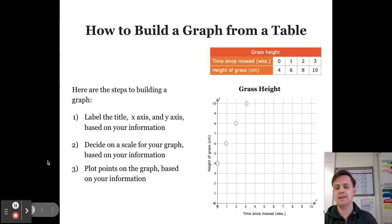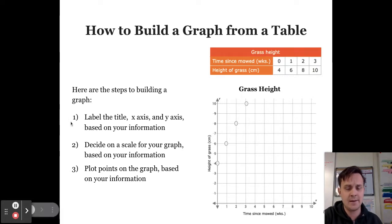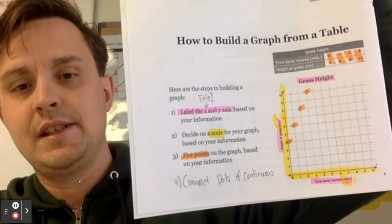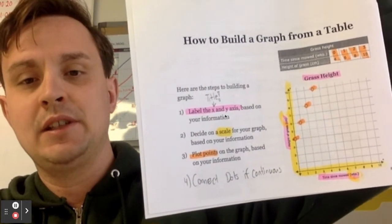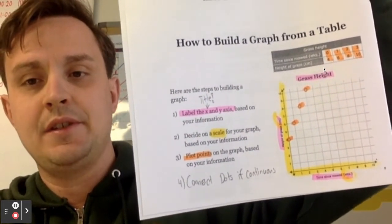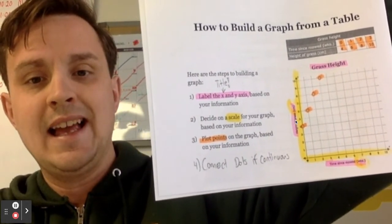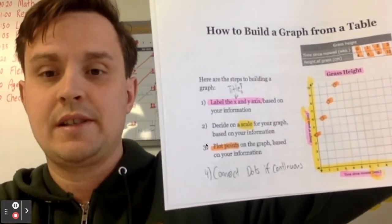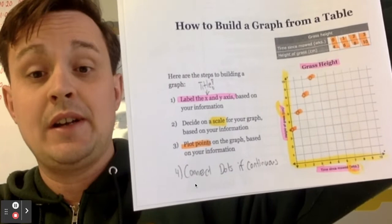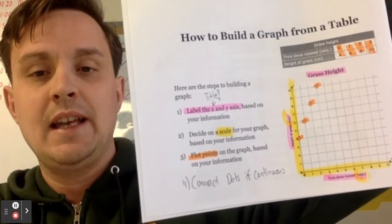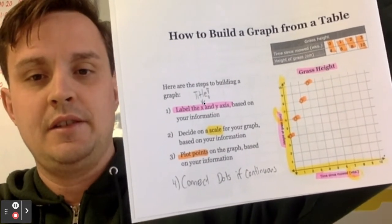Go ahead and color-code or number the three steps in your notes. Here's what I did: pink is used for labeling the x-axis and y-axis (step one), yellow is for deciding on the scale (step two), and orange is for plotting the points based on your information (step three). I also added a step four — connect the dots if the data should be shown as a continuous line graph. And note: your copy of the notes may be missing a title, so add that in.